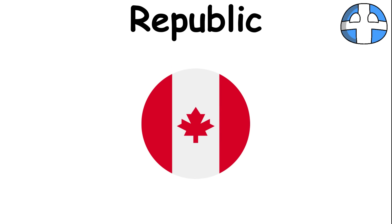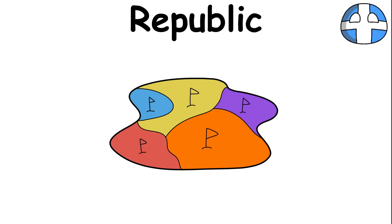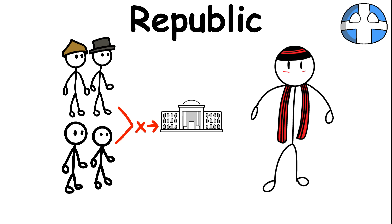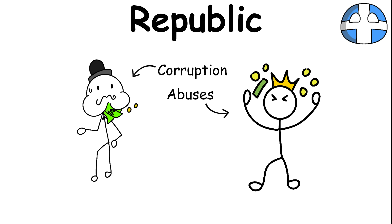Canada is a democracy but is constitutionally a monarchy. Republics also have their drawbacks because not all nations are culturally and socially suited for a republic form of government, especially if corruption and abuses are common among the leaders.